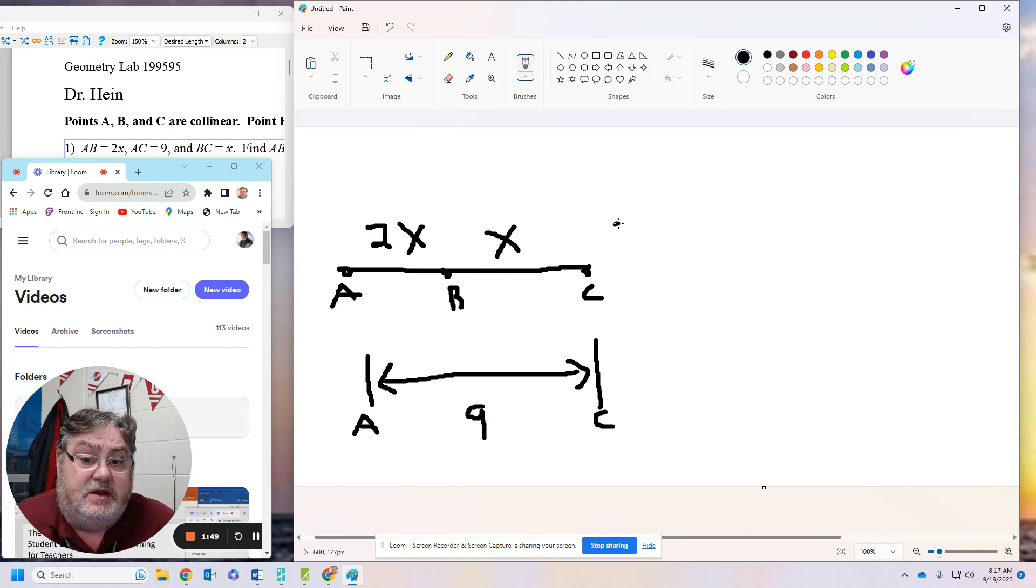So I'm going to take 2X, which is line segment AB. I'm going to add that to 1X, which is line segment BC. And I'm simply going to make it equal 9.